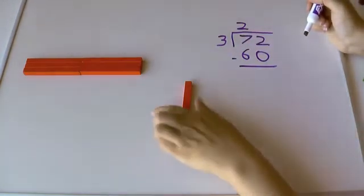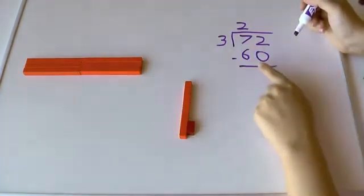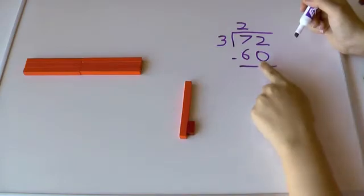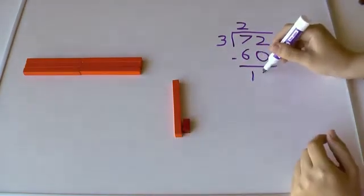So I've taken away six tens or 60 from my total amount of 72. I started out with 72 down here and I took away 60. So there's my 60 I took away. And here's how you represent it with symbols. Take away 60. What do I have left? I have 12 left.